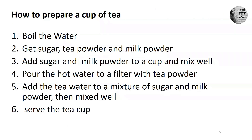So first we boil water, then gather sugar, tea powder, and milk powder. Then we put sugar and milk powder into a cup and mix well. We pour the hot water through a filter with the tea powder. Add the tea water to the mixture of sugar and milk powder and mix well. Finally, now you have a tasty tea — serve it, or you can drink it.